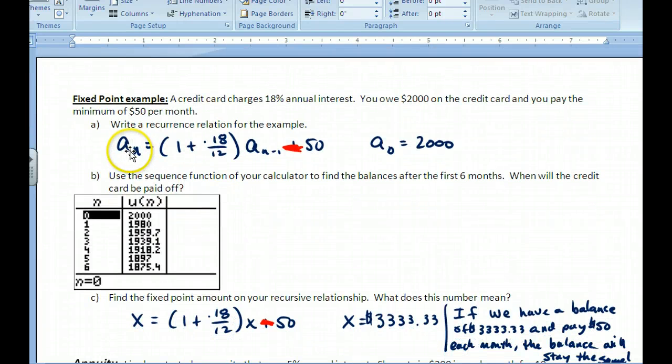On the credit card example, we have the recursive formula where we're paying interest on the previous amount borrowed from the bank, and then paying off $50. When we pay off $50, we're subtracting 50 from what we owe, so this would be a minus. Your initial amount would be $2,000.